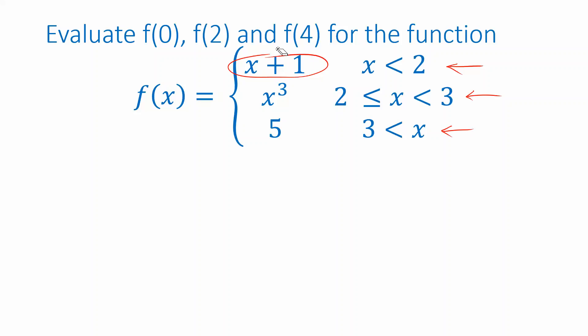So let's look at examples of evaluating this function. Suppose I want f of 0, so I'm plugging a 0 into this function. Well, 0 is less than 2, so I'm supposed to use the first line. So I'm supposed to evaluate 0 plus 1, and that gives me 1.